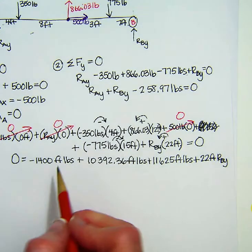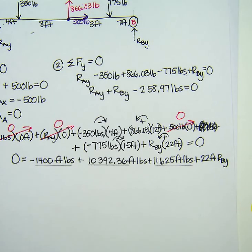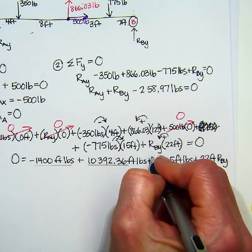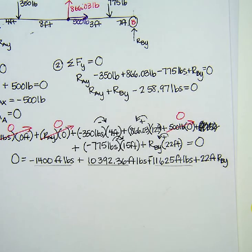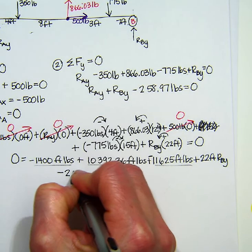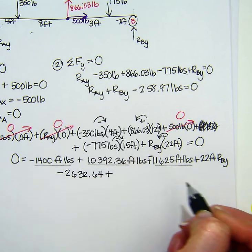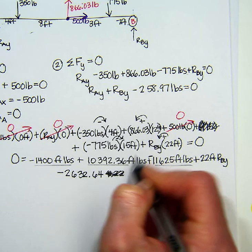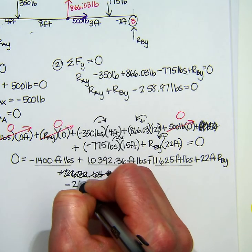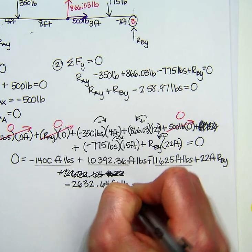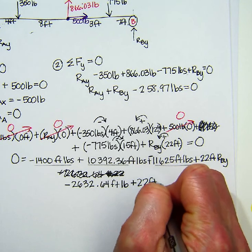So now I'm going to combine my like terms. Oh, and I almost made a mistake here. This is negative 775 times 15. This is a negative. That's why we put these negatives up here so that we don't make that mistake. So I'm going to do negative 1,400 plus 10392.36 minus 11625. So I get negative 2632.64 plus 22. Oh, look at there. I forgot my units already. We're just going to make a mistake. Negative 2632.64 foot-pounds plus 22 feet RBY.